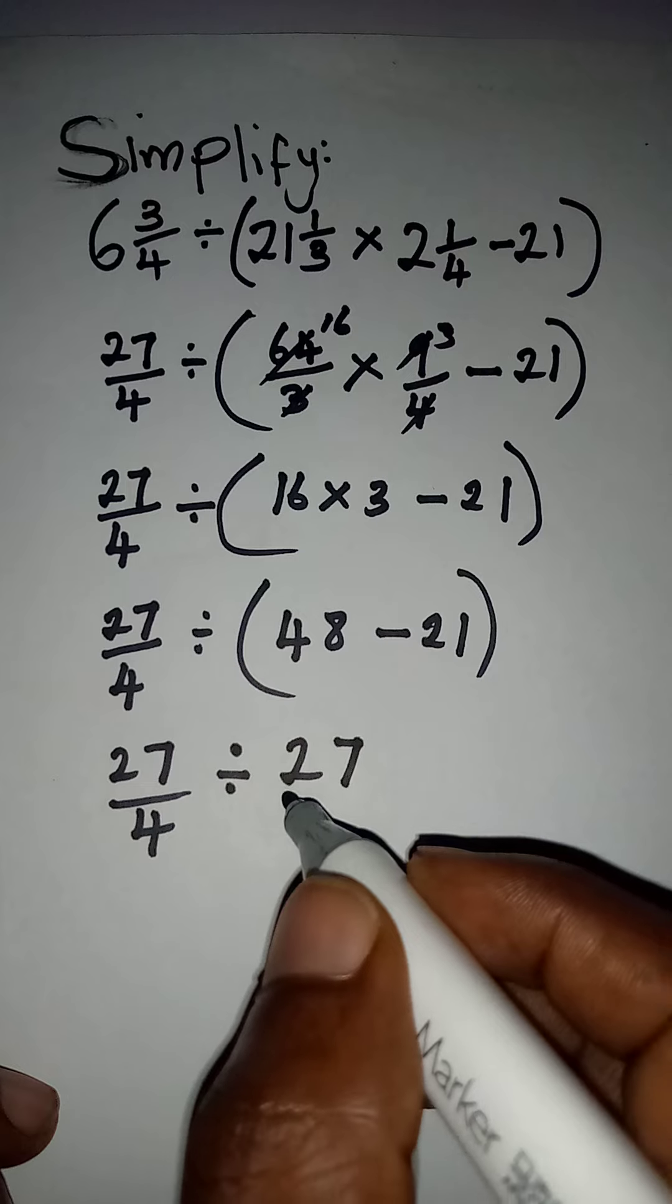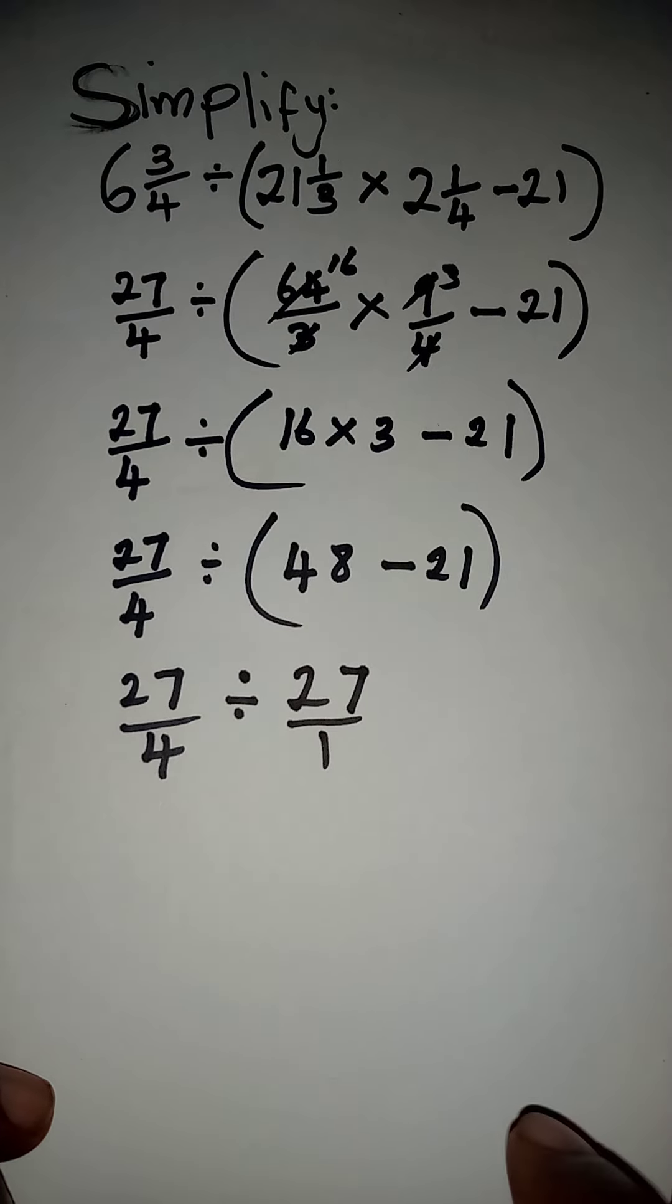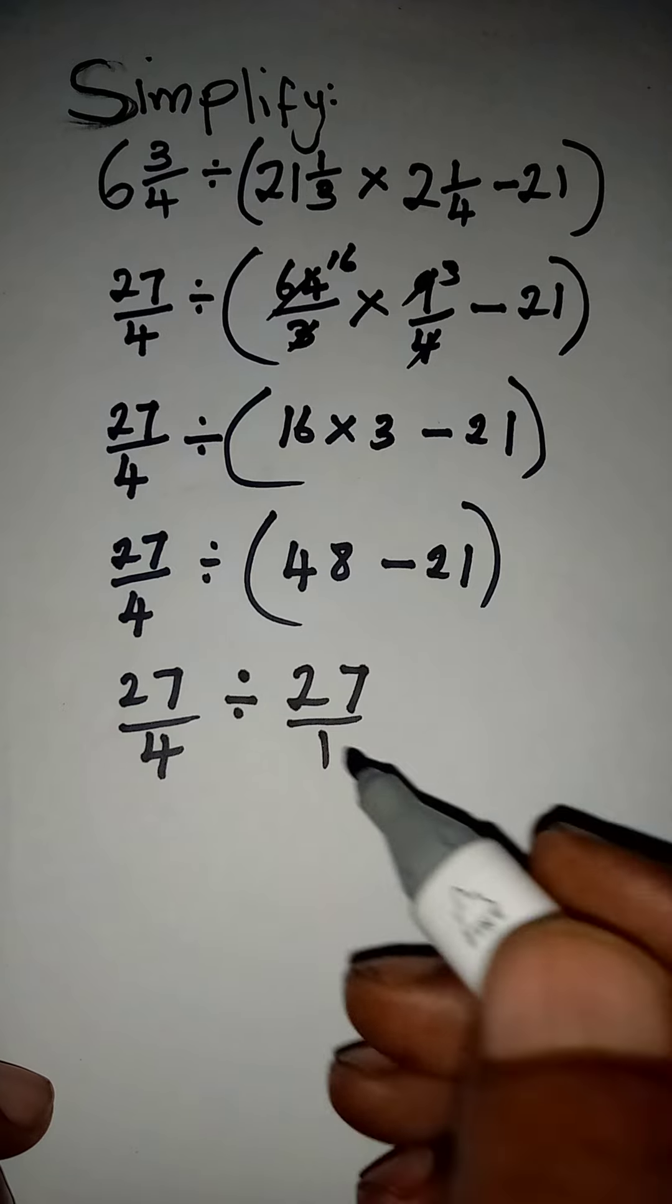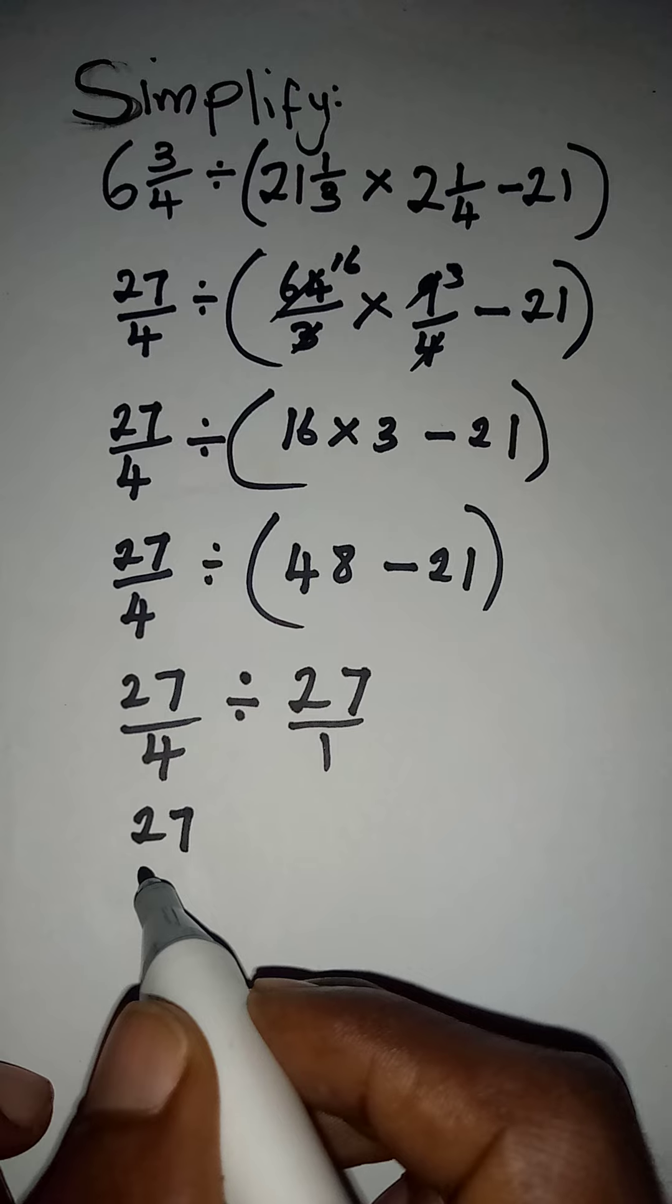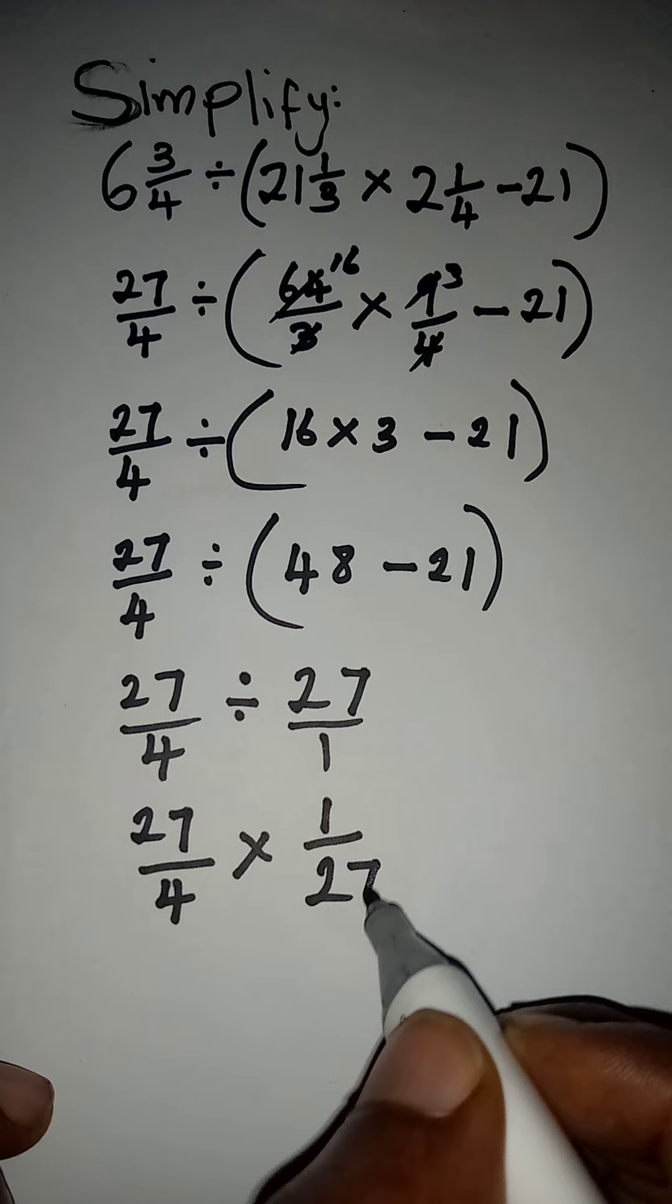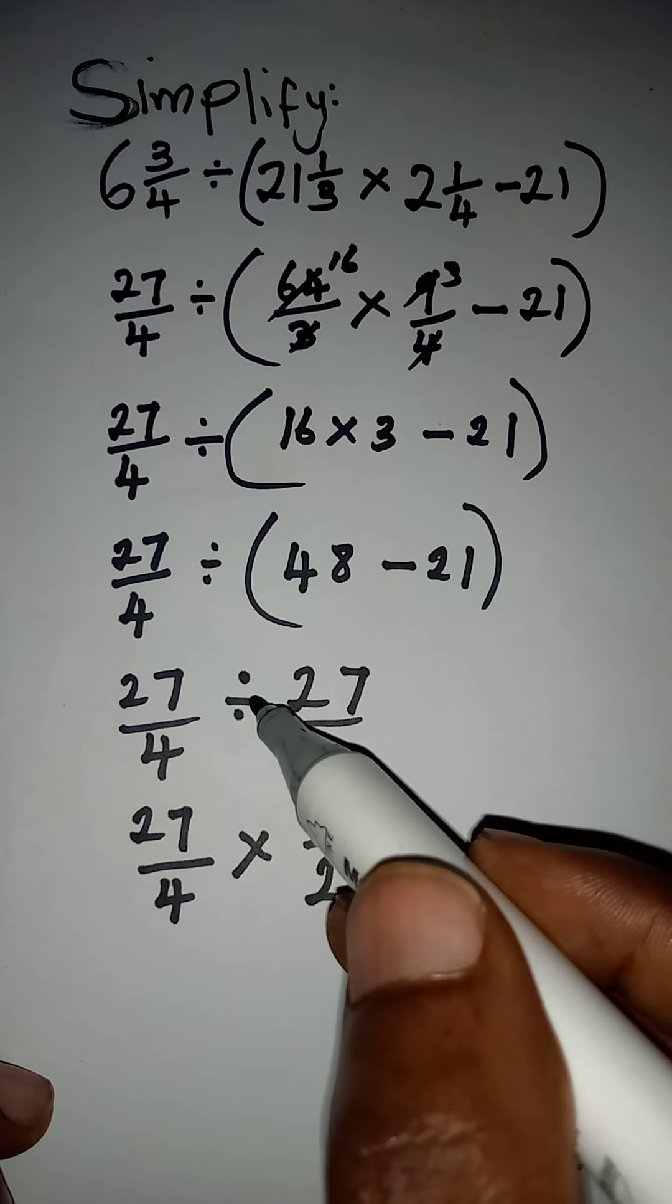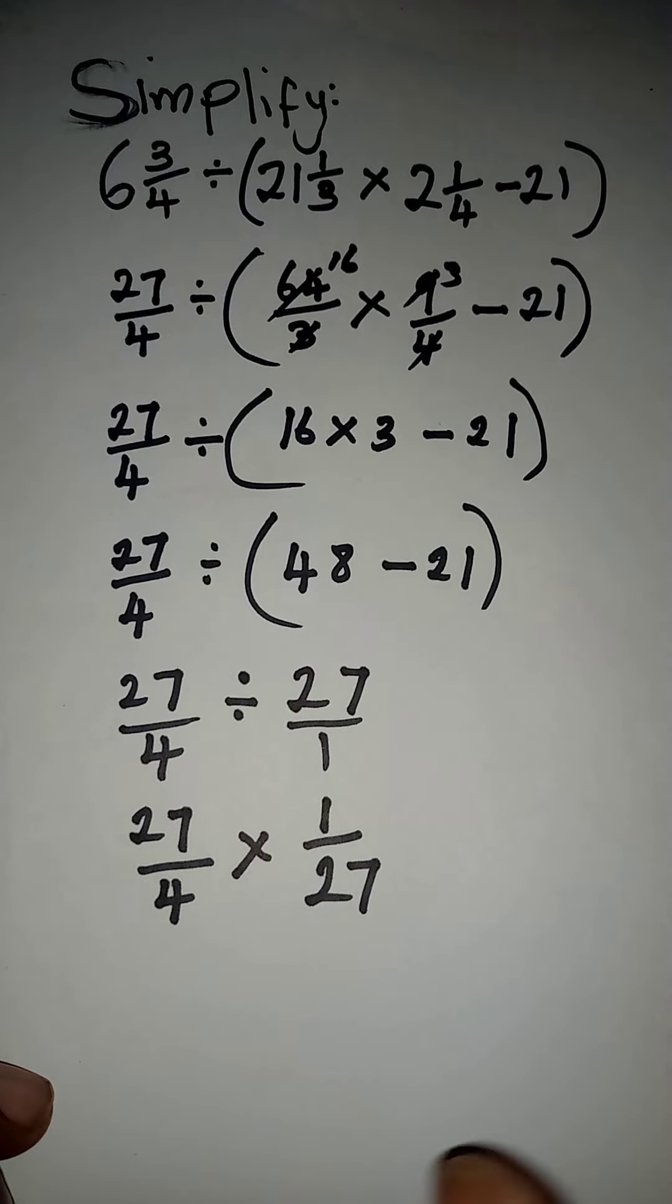And remember that this 27 is also over 1. So if I take a step further, I will turn this to multiplication. So I have 27 over 4 multiply by 1 over 27. Once you turn this to multiplication, the 27 will come down and 1 will go up.